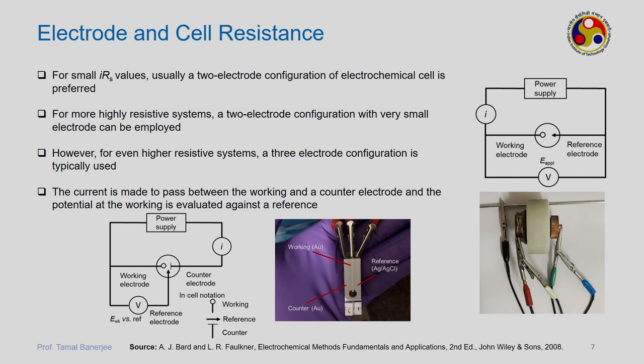When the IRS ohmic drop is small, a two-electrode configuration is preferred. In the two-electrode assembly, you have two electrodes with electrolyte between them — one is the reference electrode, one is the working electrode — and you apply a voltage across them from an external power supply and measure current. This works well when resistance is low (device level).